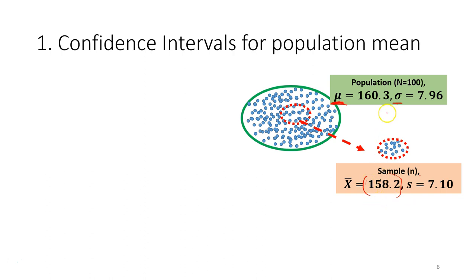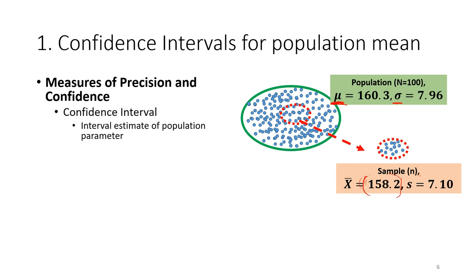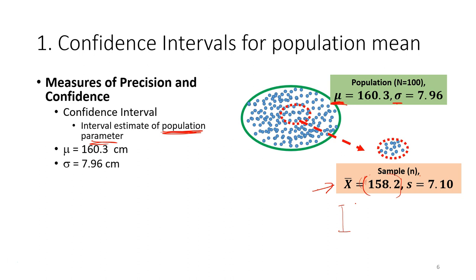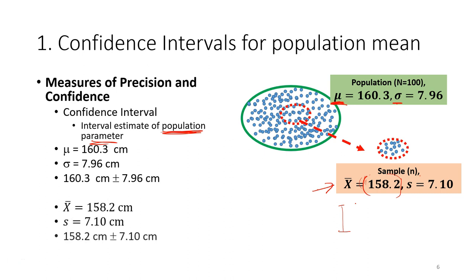The next question is: we need a measure to give us some idea of how good our estimate is using the sample statistic. The confidence interval is the interval estimate of a population parameter. Based on the sample statistic we can calculate an interval, and then ask: what is the probability that our population mean will be in that interval? For example, in this case our population parameter is a mean of 160.3 cm with a standard deviation of 7.96.